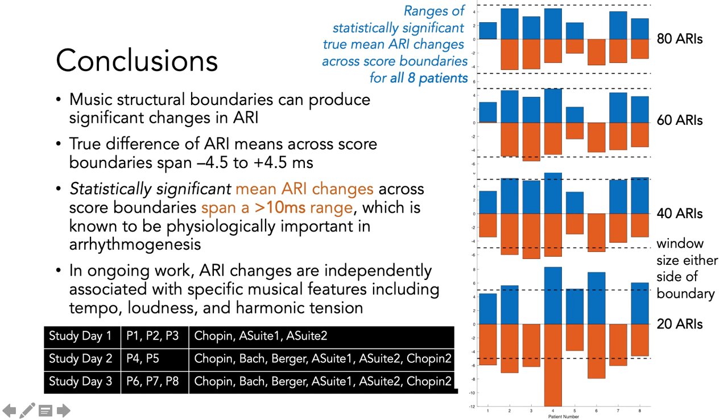The true difference of ARI means across score boundaries were found to span almost 10 milliseconds, ranging from a decrease of 4.5 milliseconds to an increase of 4.5 milliseconds for windows of 80 ARIs.